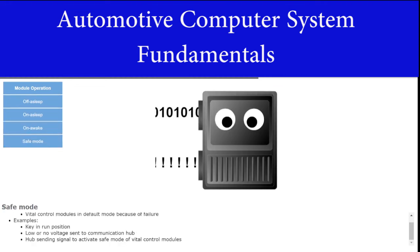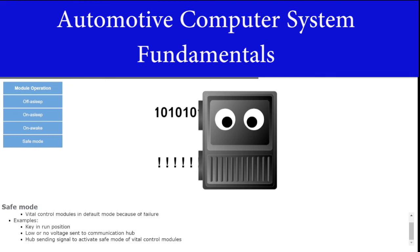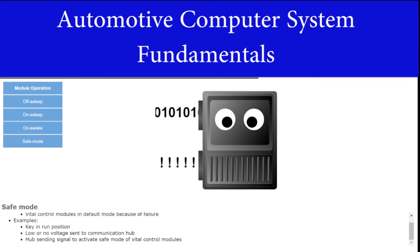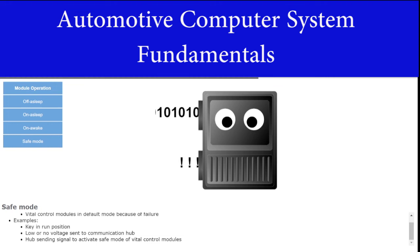Safe mode occurs when vital control modules are in default mode because of a failure. A module will be in safe mode with the key in the run position or when a low or no voltage signal is sent to the communication hub. If the hub sends a signal to activate safe mode, vital control modules will enter safe mode.